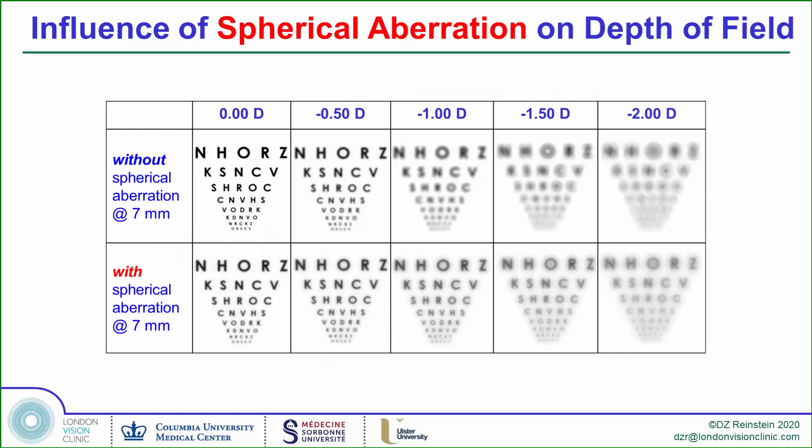Consider the increasing defocus along the top row and look at the minus-150 defocus simulation. Adding spherical aberration to the same minus-150 defocus provides much better edge detection — thanks to the neural processing of this particular aberration, a natural feature of the human visual system.